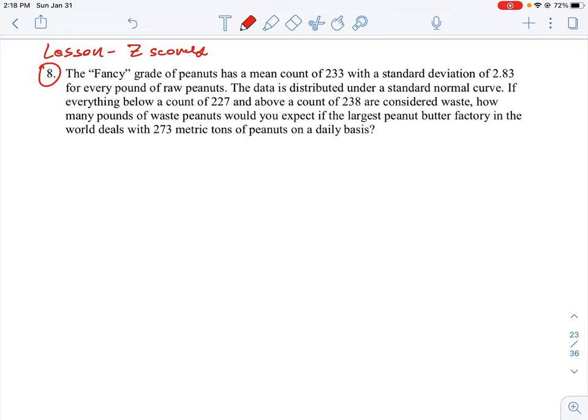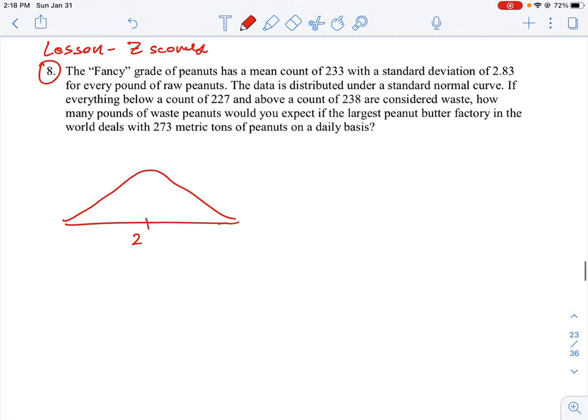We'll just set up a curve here so we can understand what we're looking at - a normal distribution curve. In the middle, we're told that the fancy grade of peanuts has a count of 233, and the standard deviation is 2.83 for every pound of raw peanuts.